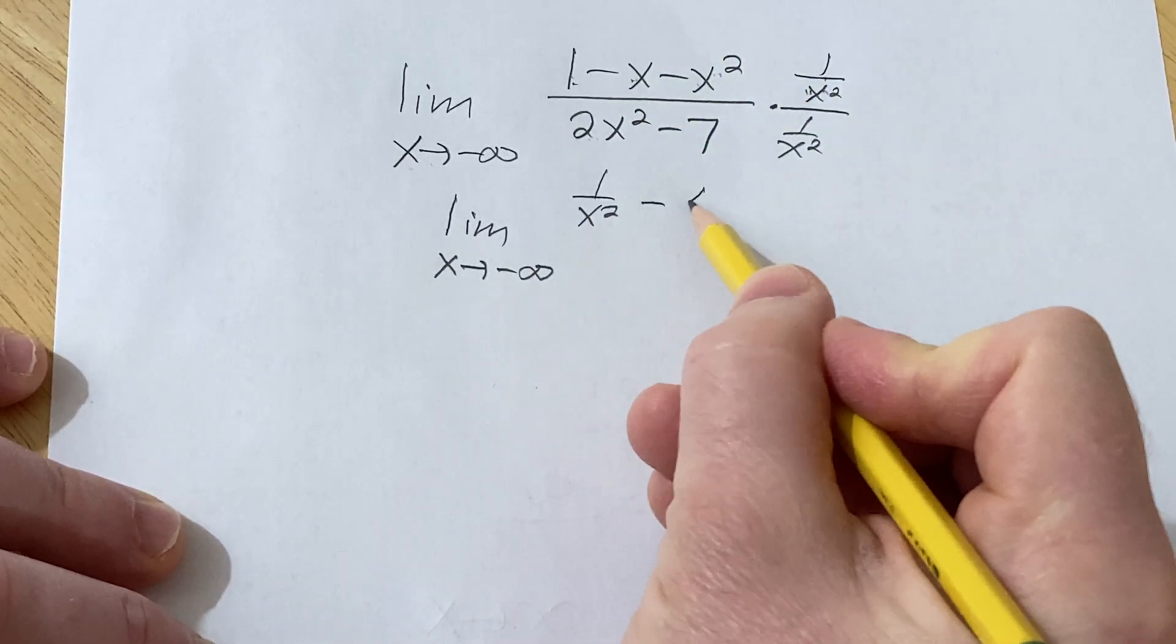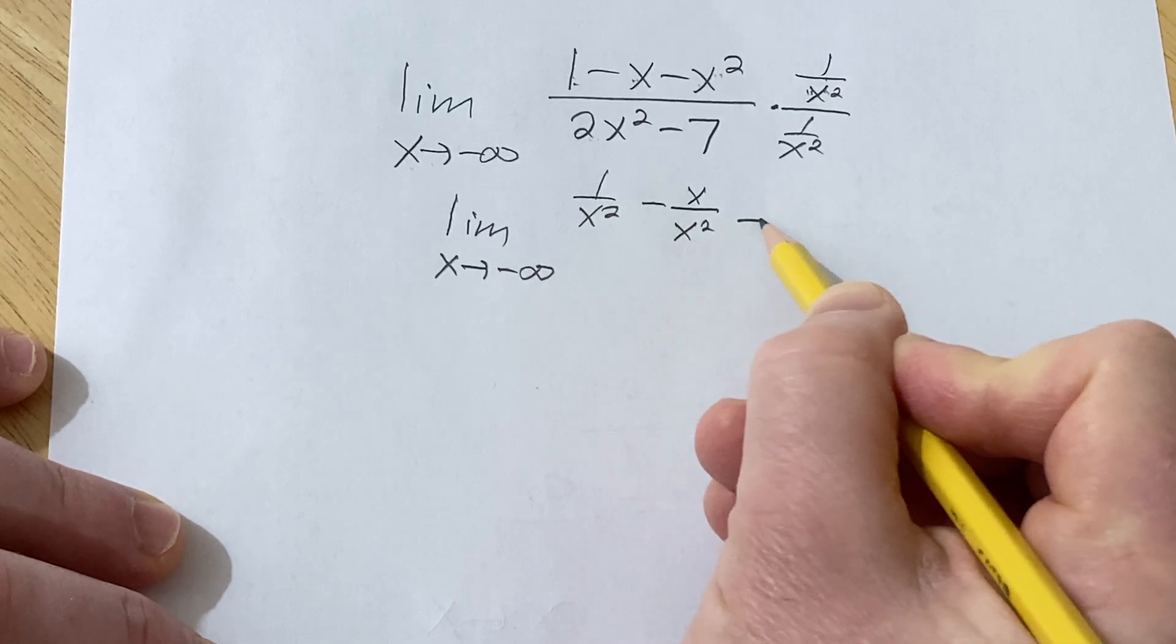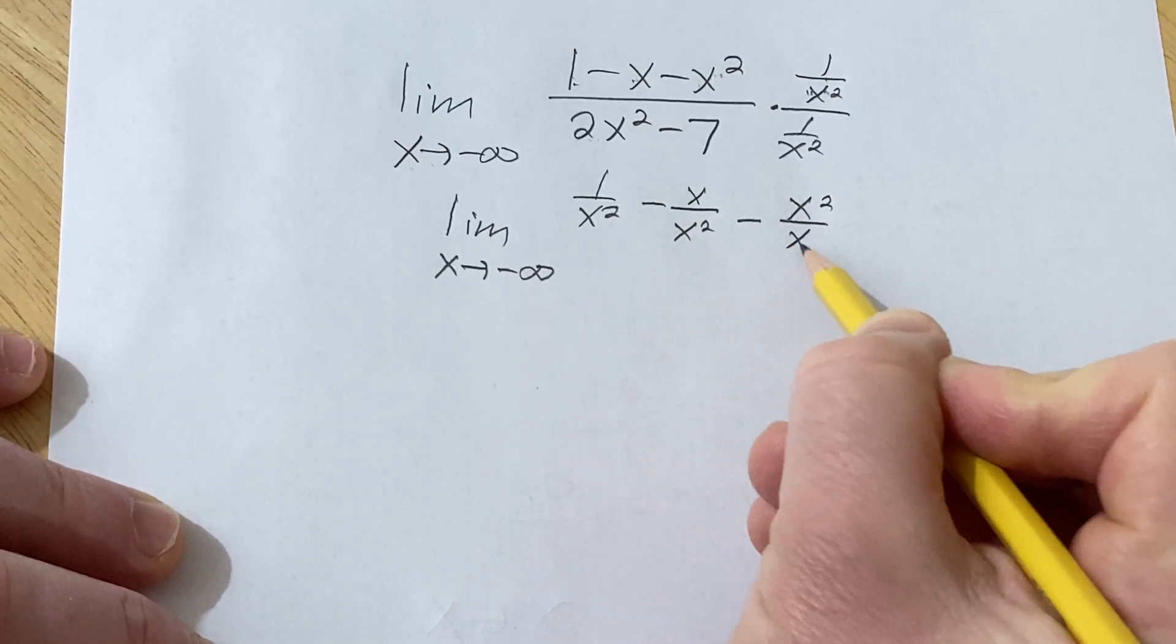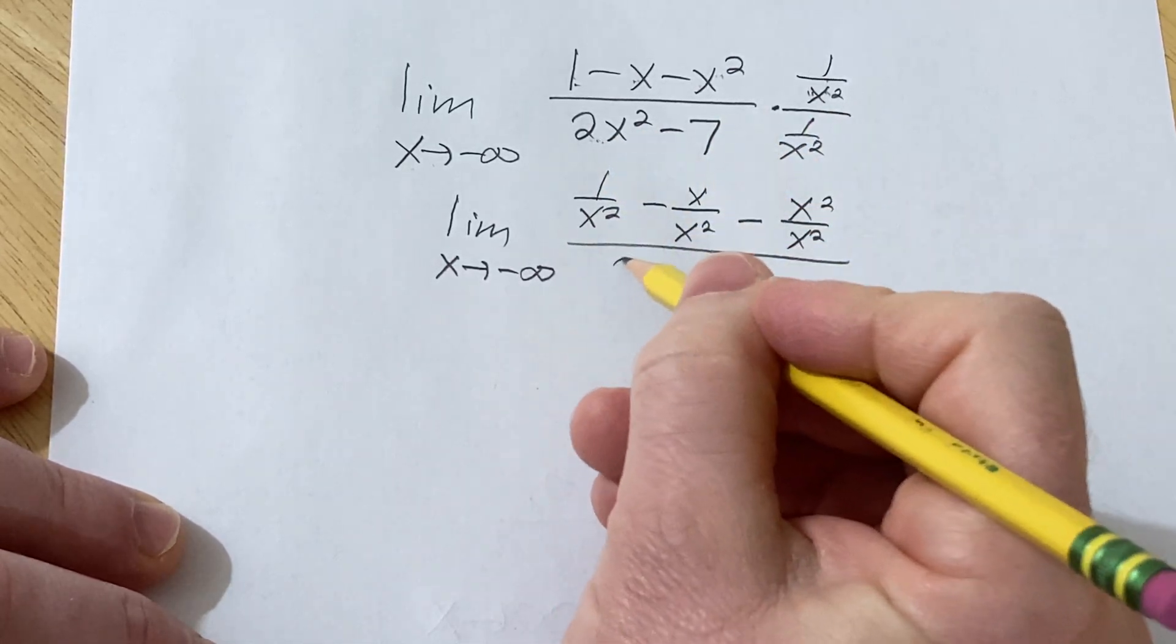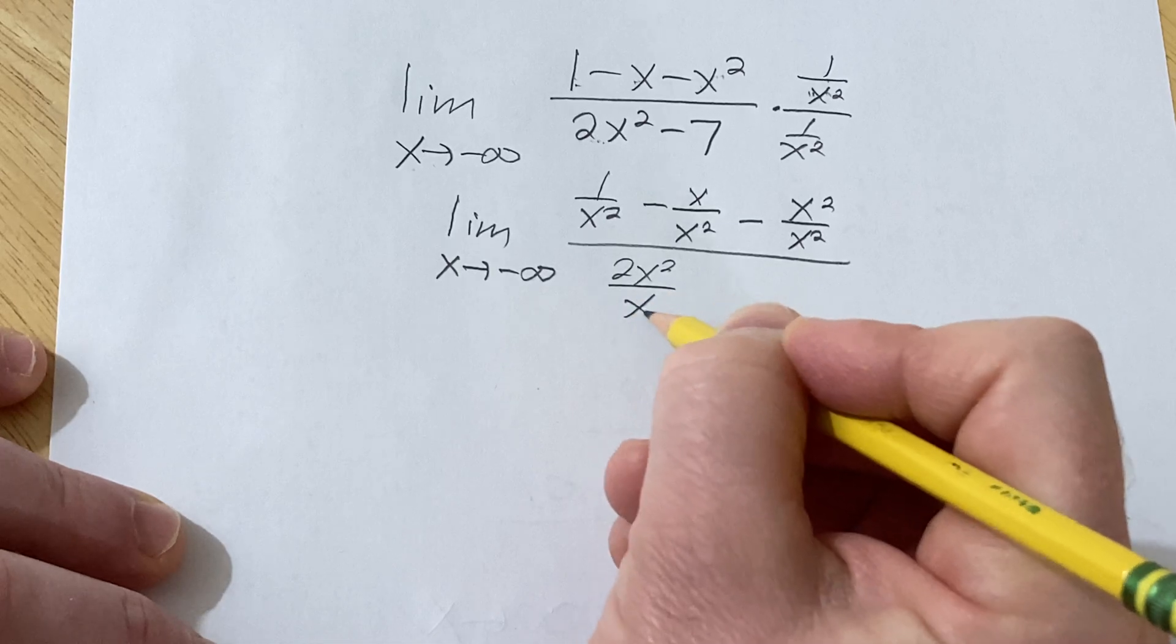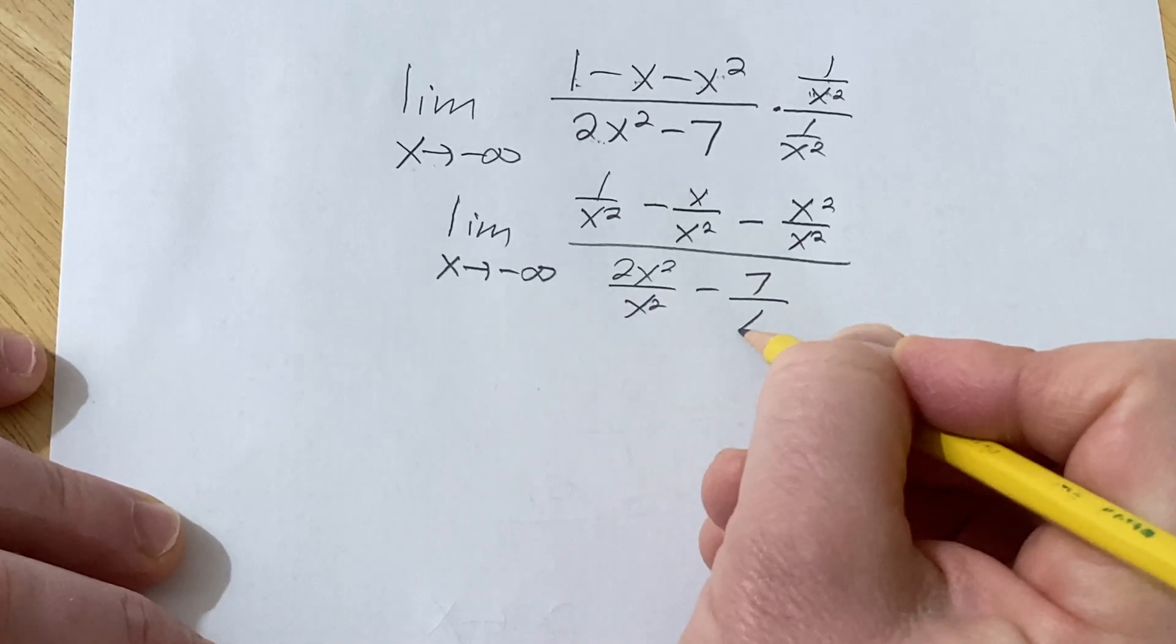I'll write it. I won't skip any steps. x over x squared minus... and there we have that. And then here this will be 2x squared over x squared minus 7 over x squared.